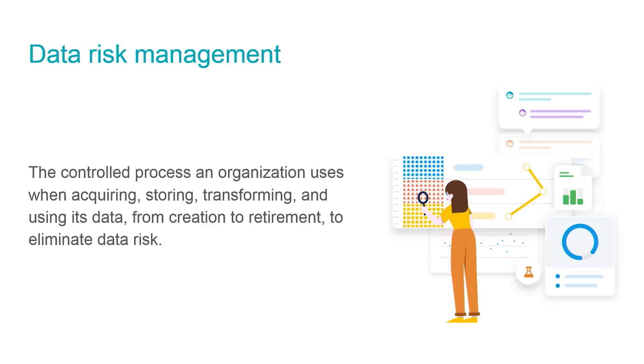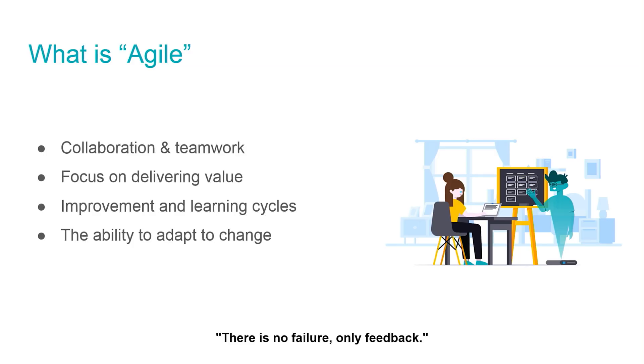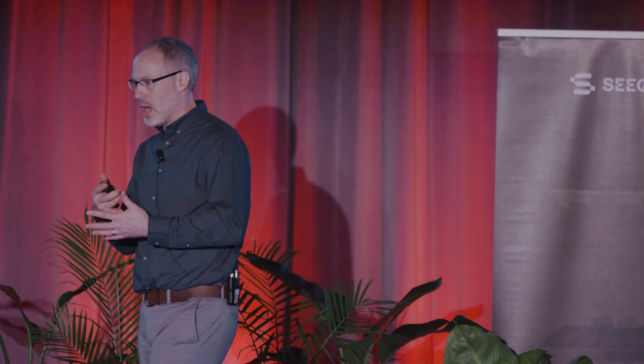Data risk management is about the processes around acquiring, storing, transforming, and using the data from its creation all the way through its life cycle. The concept of agile steals from the software development space — it's a very iterative cycle. We focus on teams, collaboration, and delivering value. I've found we can take those concepts from software development and apply them in this space, and it really just comes down to the ability to adapt to change.